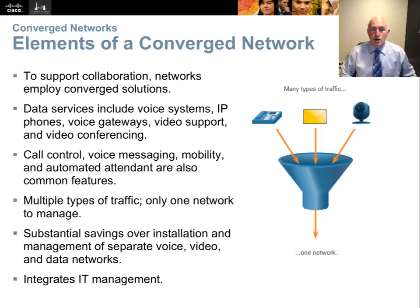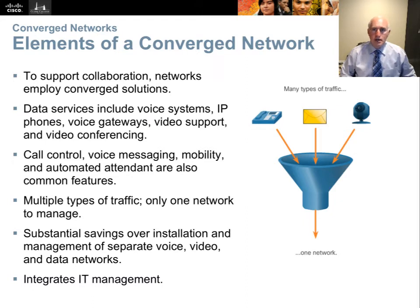Elements of a converged network: traditionally, we had separate networks. There was a network for video, sometimes called CATV or video conferencing, and they often used coaxial cabling. We also had a telephone network with business phones and voicemail systems called a PBX. All of those used proprietary wiring, typically RJ11 phone wiring. But businesses have moved on and changed their wiring and infrastructure for voice and video to match the data network. So everything is now sent as a data packet on an Ethernet cable or wirelessly across Wi-Fi.